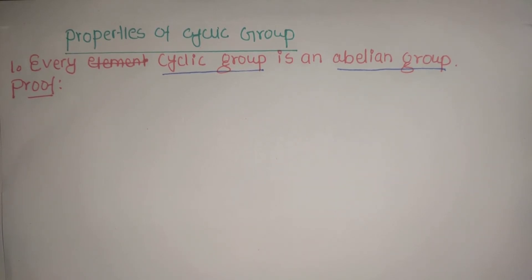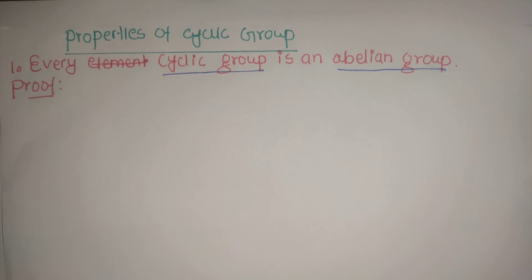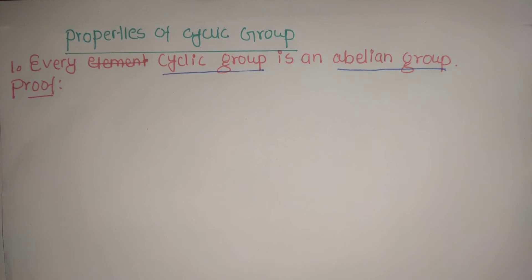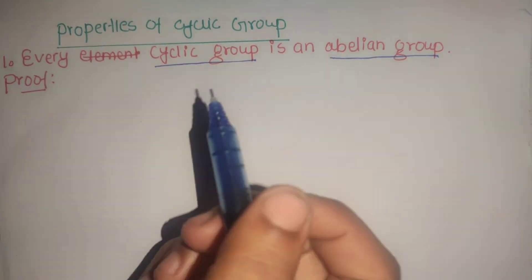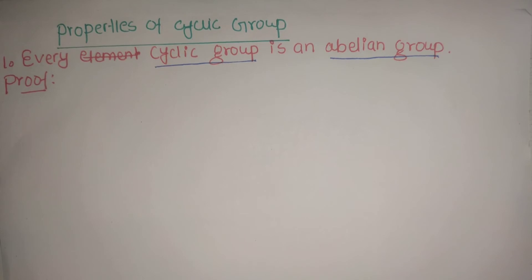That group's every element can be expressed in the form of a single element 'a' — that is what we showed. And for any two elements x, y belonging to that cyclic group, we need to show that x★y = y★x.